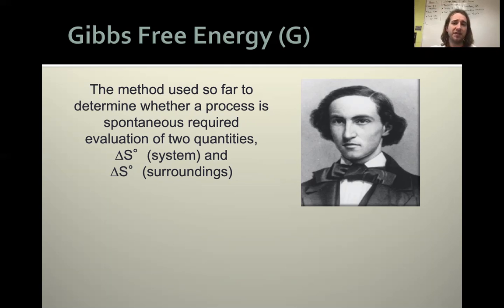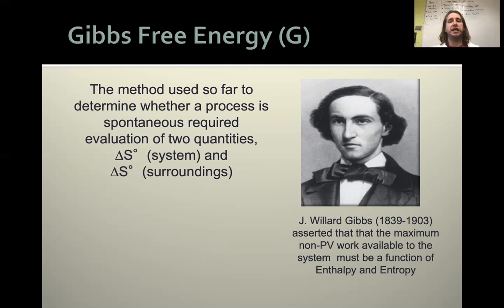And it is named after this guy by the name of J. Willard Gibbs from 1839 to 1903. He said that the maximum non-pressure volume work, so not expanding things or contracting things, pushing out against the universe, that the maximum amount of work you can do in your system is a function of our enthalpy and entropy. And we know that. We've already talked about that. That's what we were working on in 20.2.